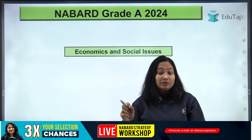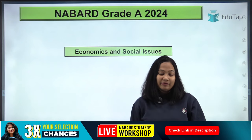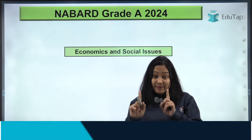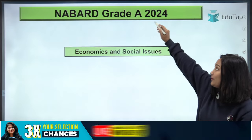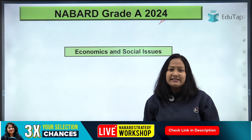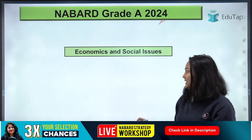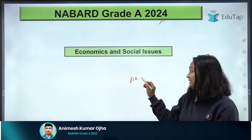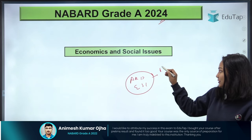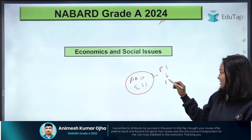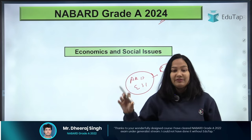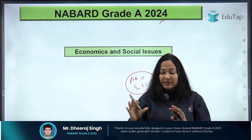Why is it important to talk about this component at this moment of time? Because whenever you are starting to prepare — especially if you are targeting NABARD Grade A 2024 — it is advisable that you start with static. By static, I mean ARD static and ESI static, because these two subjects are going to help you in Phase 1 as well as Phase 2, and their weightage in Phase 1 is also the maximum.